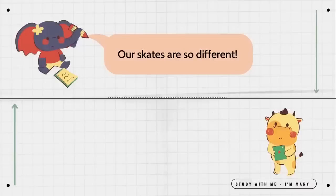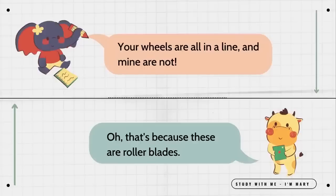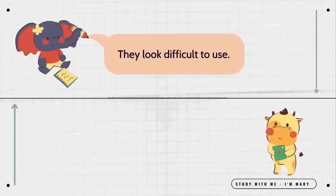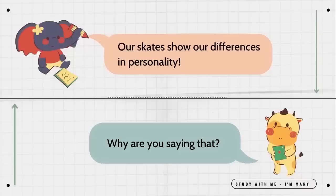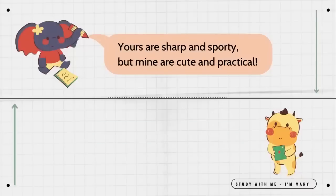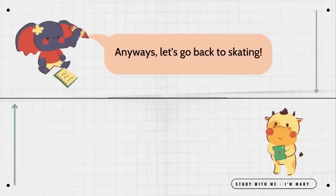Our skates are so different. What do you mean? Your wheels are all in a line and mine are not. Oh, that's because these are rollerblades. They look difficult to use. They just go a little faster. Our skates show our differences in personality. Why are you saying that? Yours are sharp and sporty, but mine are cute and practical. I'll try to take that as a compliment. Anyways, let's go back to skating. Let's go.